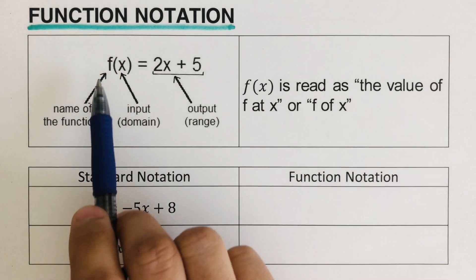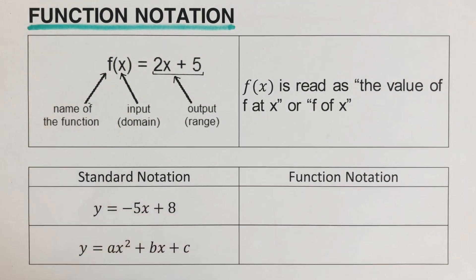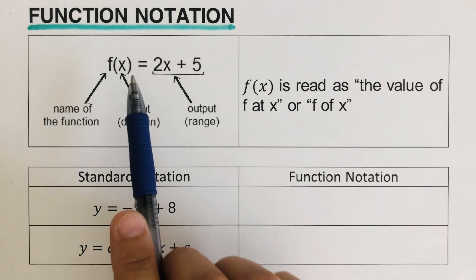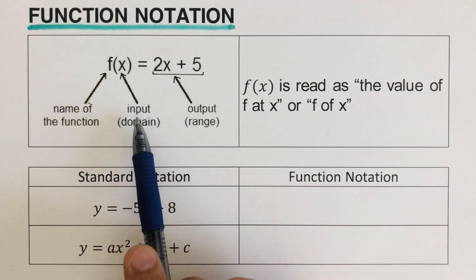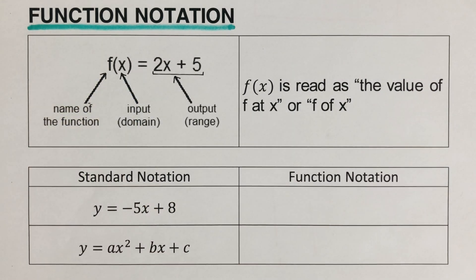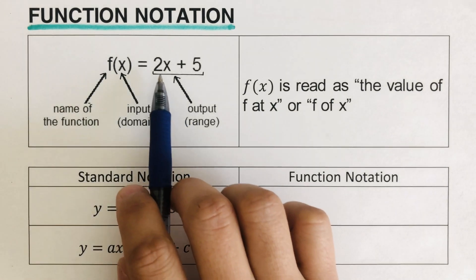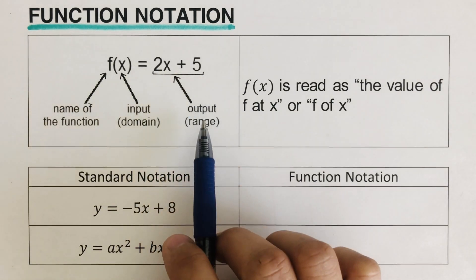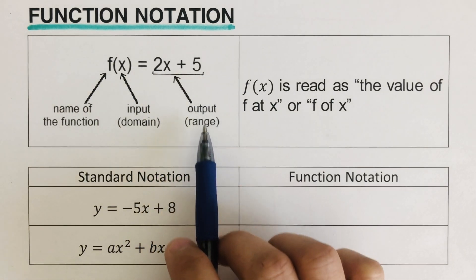The f here represents the name of the function. Now it doesn't have to be f only — it can be a of x, b of x, z of x. Whatever's inside the parentheses is the input or the domain of the function. This may not be x either; it can be f of t or any letter in the alphabet. On the right side, 2x plus 5 is the output or range.